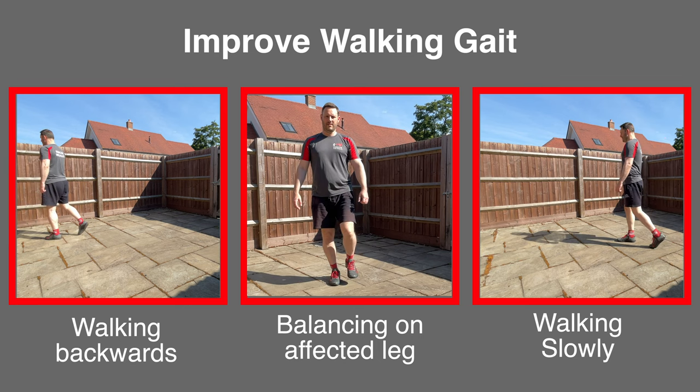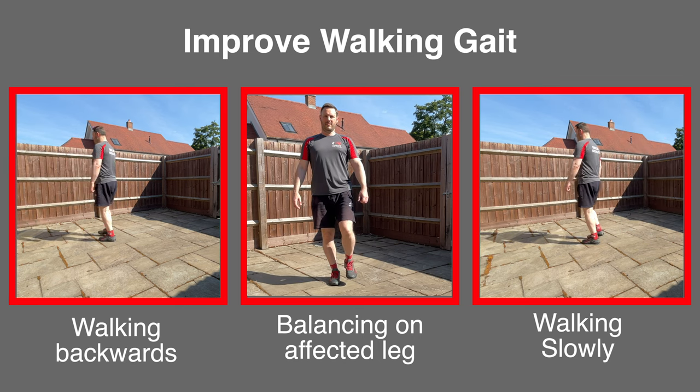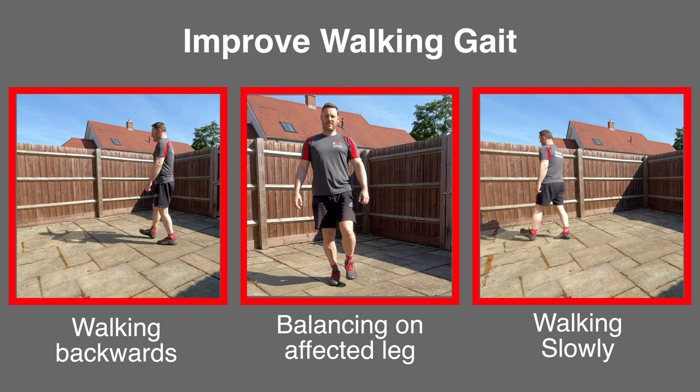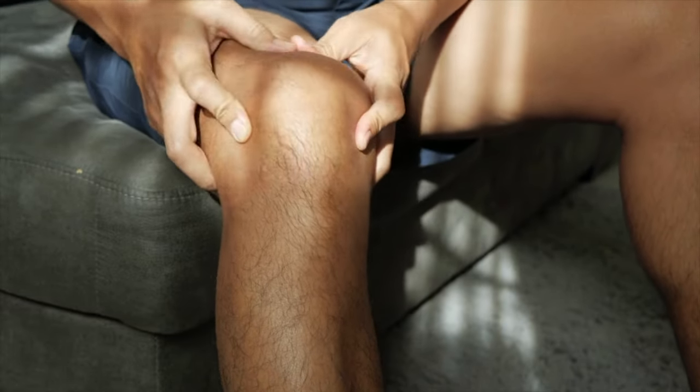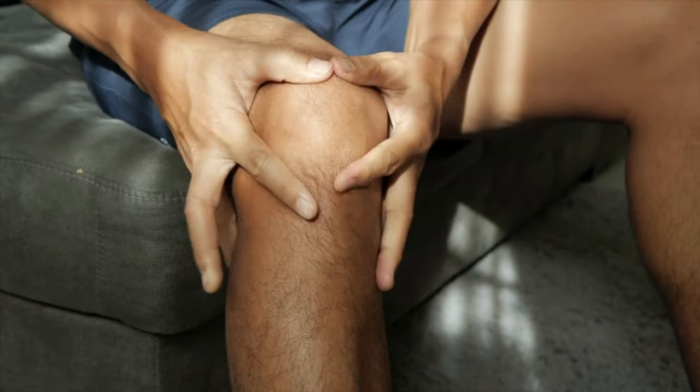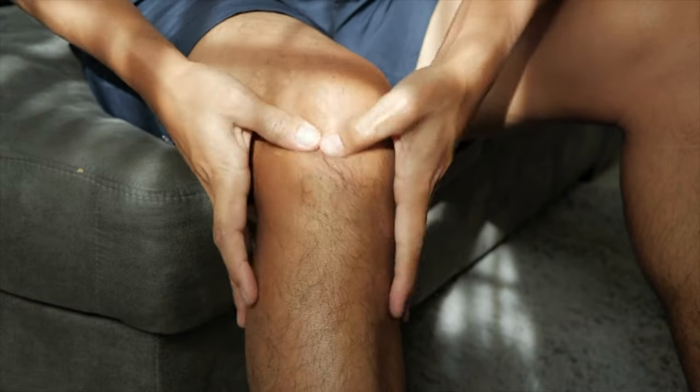All of these exercises will help improve your walking gait, but you can also add specific exercises such as walking backwards, balancing on the affected leg, and walking slowly to improve proprioception. It's very possible that you may experience flare-ups of pain or swelling in the knee joint in the early stage, which will indicate that you have done too much too soon. There should not be any pain other than some slight muscle soreness over the following one to two days after exercise.